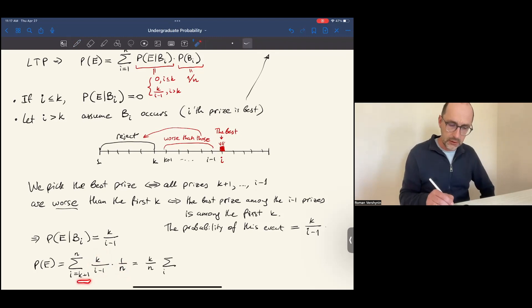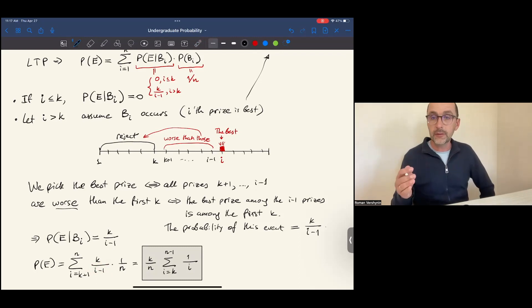Let's simplify the sum a little bit by moving the common factors outside the sum. Now let's shift the indices by 1. Instead of starting from k plus 1, let's start from k. Instead of ending at n, we end at n minus 1, and instead of i minus 1, we'll get i. This is the probability that we pick the best prize with our strategy, when we reject the first k prizes and accept the first prize that's better than them.